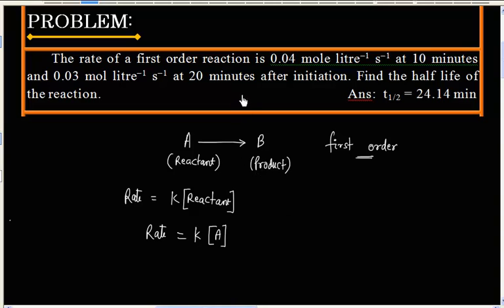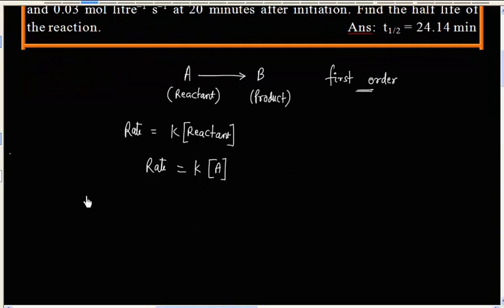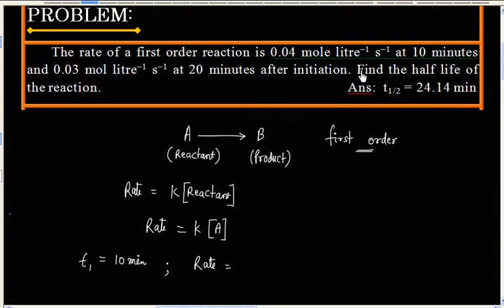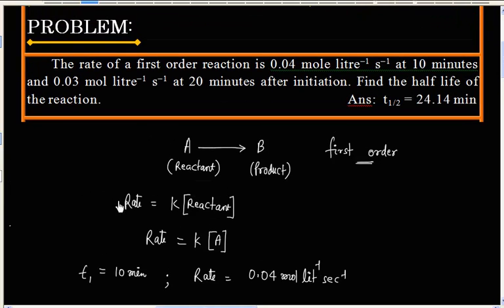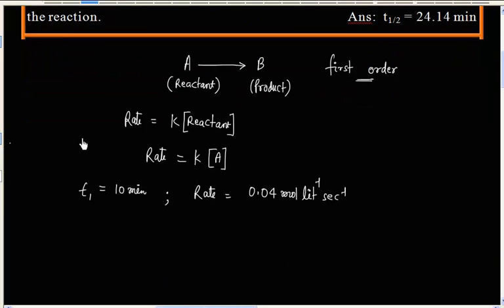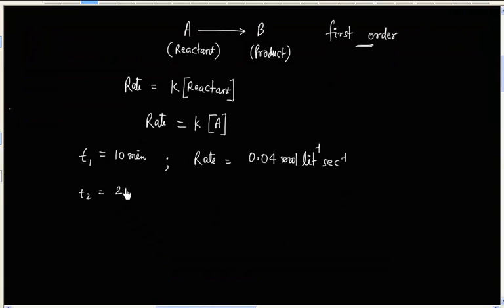Now, we have been given rate at two different times. When t is 10 minutes, rate is given 0.04 mol per liter per second. When time is 20 minutes, rate is 0.03 mol per liter per second.